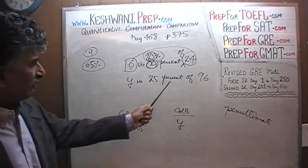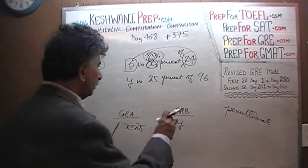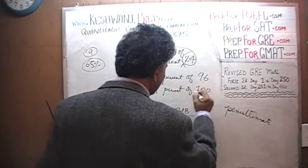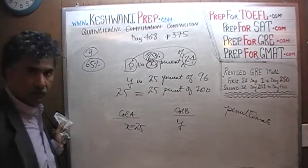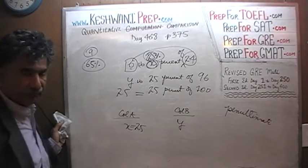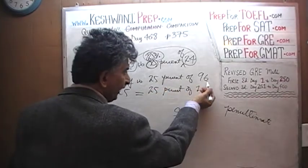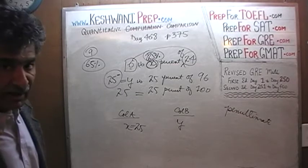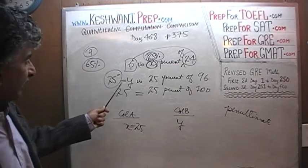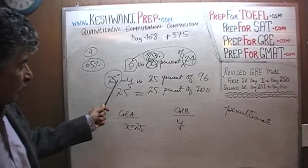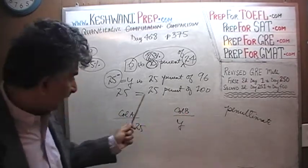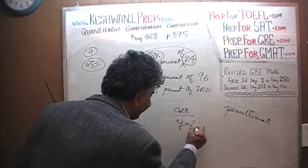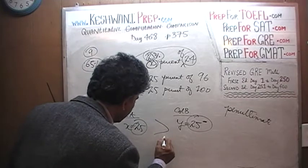In the next line, they say that y is 25% of 96. We know that 25% of 100 is 25. Therefore, 25% of 96 has to be something less than 25. What that quantity exactly is does not matter — we just simply have to understand that y, whatever it is, has got to be less than 25, because 25% of exactly 100 is 25, so 25% of 96 must be less than 25. So we have something less than 25 versus 25 — 25 is bigger. The answer is A.